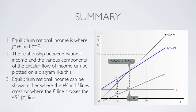In summary, the equilibrium level of national income is where injections equal withdrawals and income equals expenditure. The relationship between national income and the various components of the circular flow of income can be plotted on a diagram like this on the right-hand side. The equilibrium national income can be shown either where the W and J lines cross or where the expenditure line crosses the 45-degree curve.